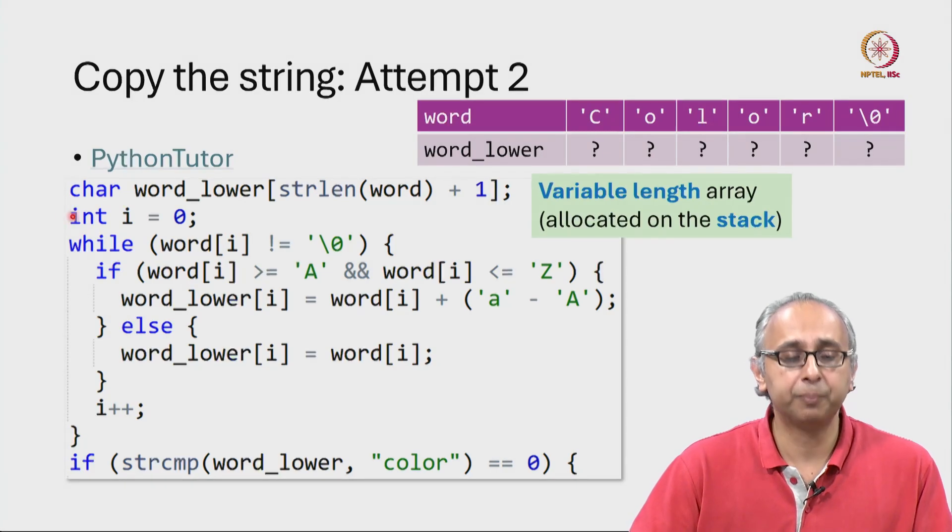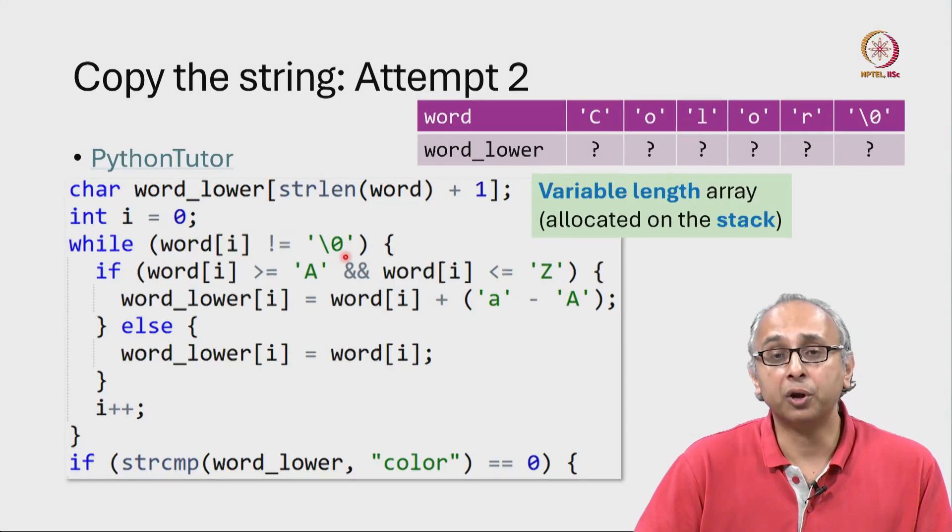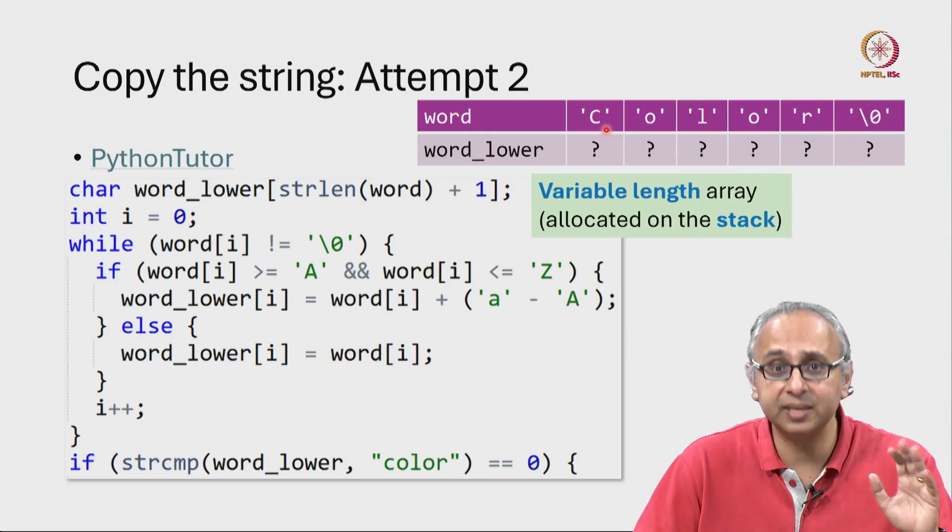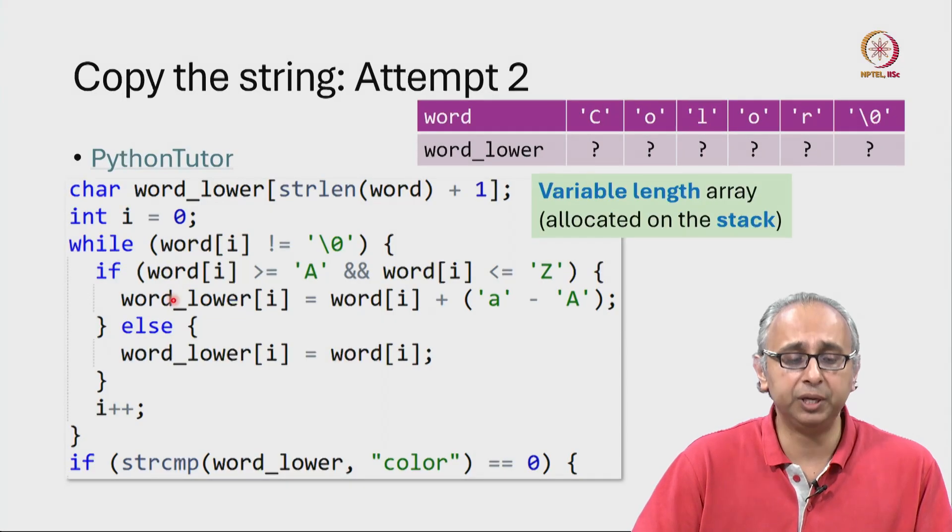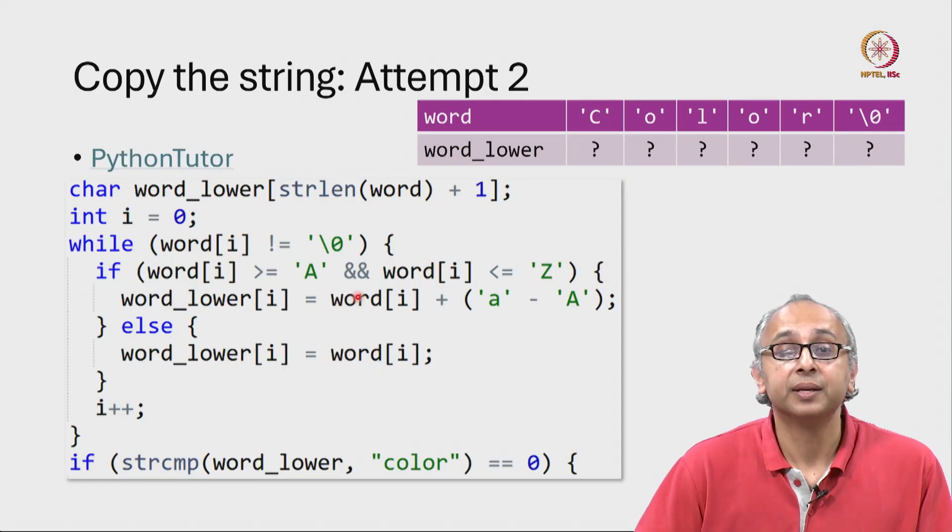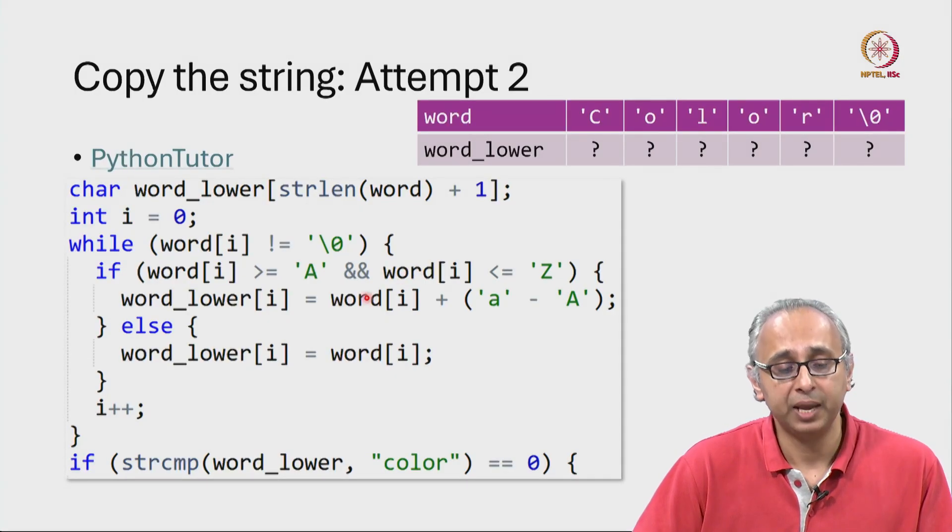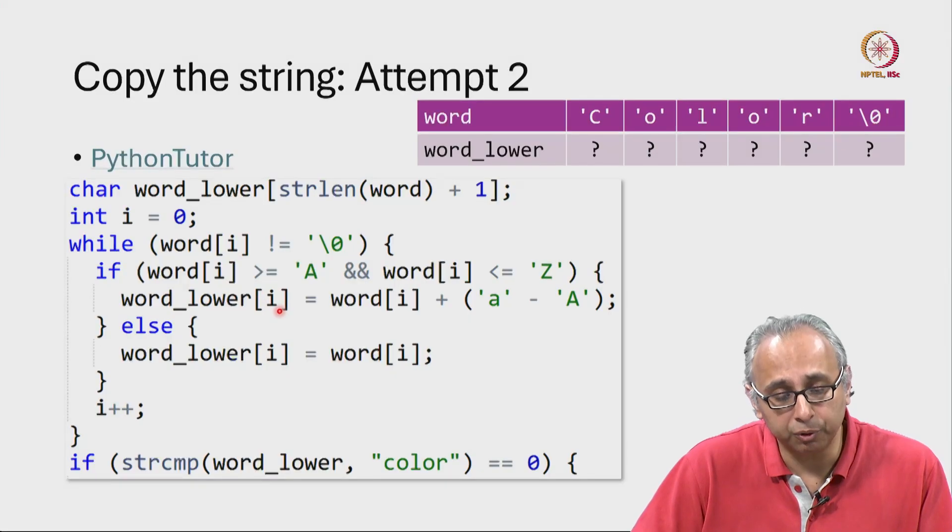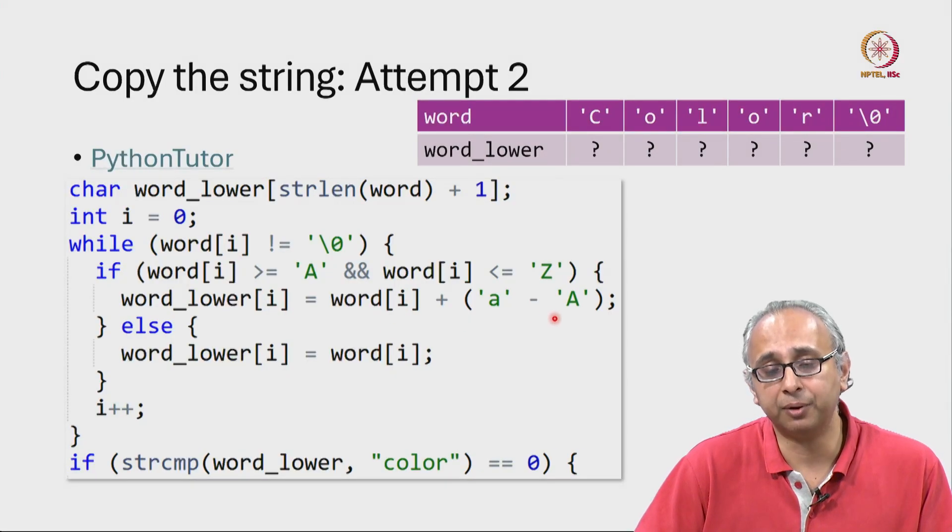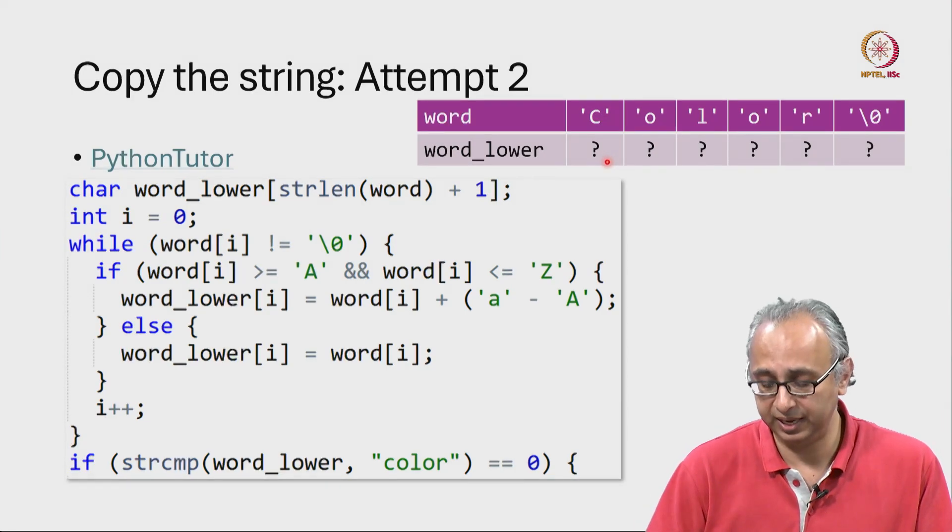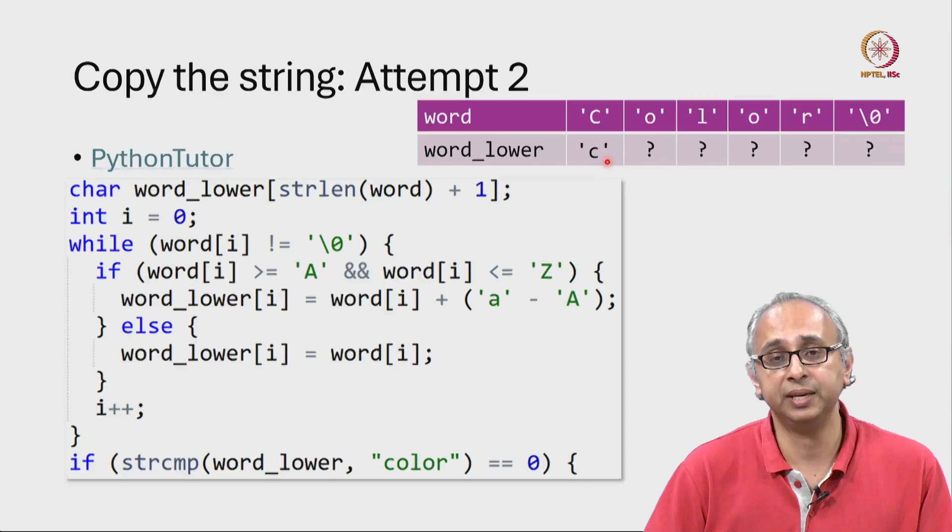So now let us pretend to be Python Tutor. We initialize i equal to 0. Is word[0] not equal to the null character? Well word[0] is capital C and that is different from the null character. So we will go into the body of the while loop. Now the letter at index 0 is between uppercase A and uppercase Z so we will go into this if condition and we're saying word_lower[0] should be word[0] plus this amount. So this will convert this uppercase C into a lowercase c and put that value in this index position.